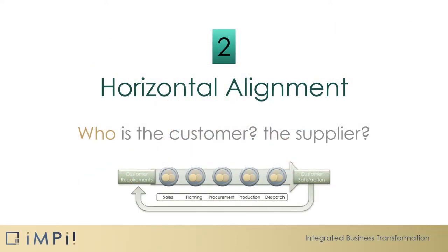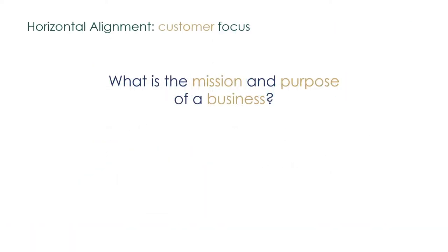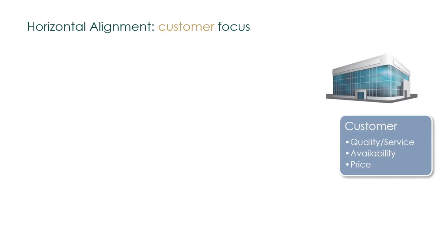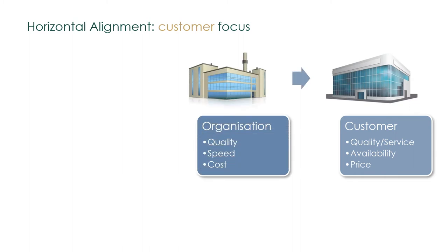Chapter 2: Horizontal Alignment. What is the mission and purpose of a business? To satisfy the customer is the mission and purpose of every business. All key processes contribute to creating value for the customer. That value means: first, the product or service meets customer requirements; second, it is readily available when they want it; third, it is correctly priced. For the organisation, this means managing the quality of their product or service, the speed of processes — such as performance, throughput, output, and lead times — and its total cost.